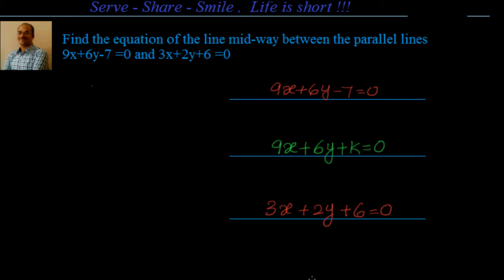Hello friends, welcome. We have to find out the equation of the line which is midway between the parallel lines 9x plus 6y minus 7 equal to 0 and 3x plus 2y plus 6 equal to 0.